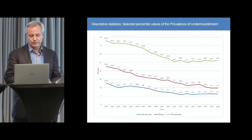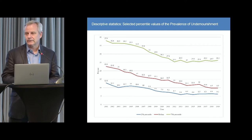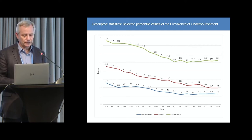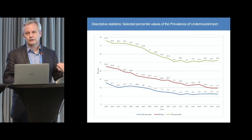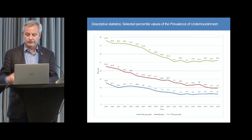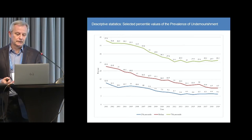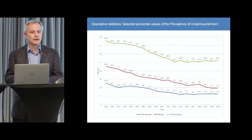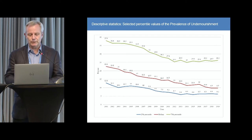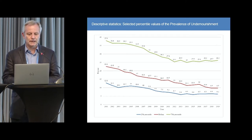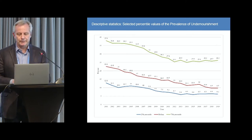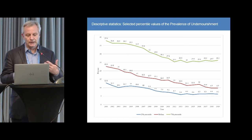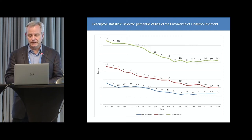If you look at the 75th percentile of the distribution, it does decline as well, but it tails off right around the time when globally the number of people considered hungry begins to level out.